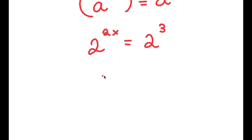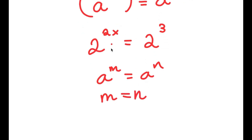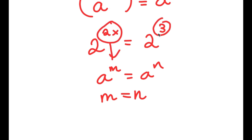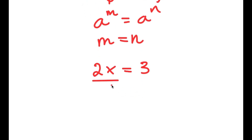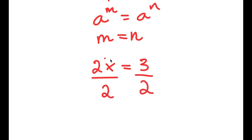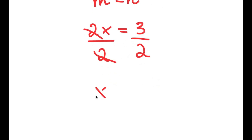Since the bases are equal, if a to the power of m equals a to the power of n, then m equals n. So 2x equals 3. Dividing both sides by 2, I get x equals 3 over 2.